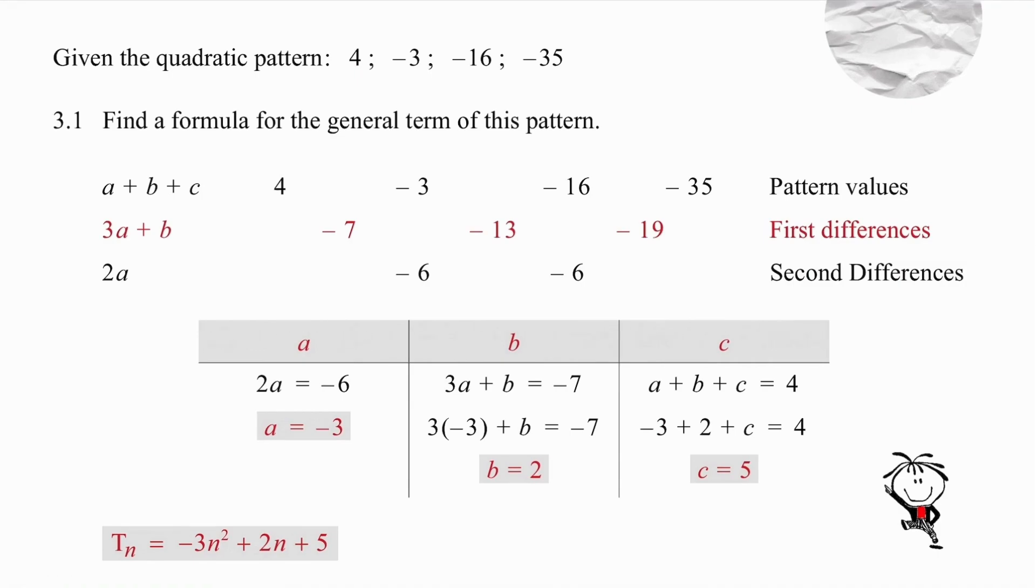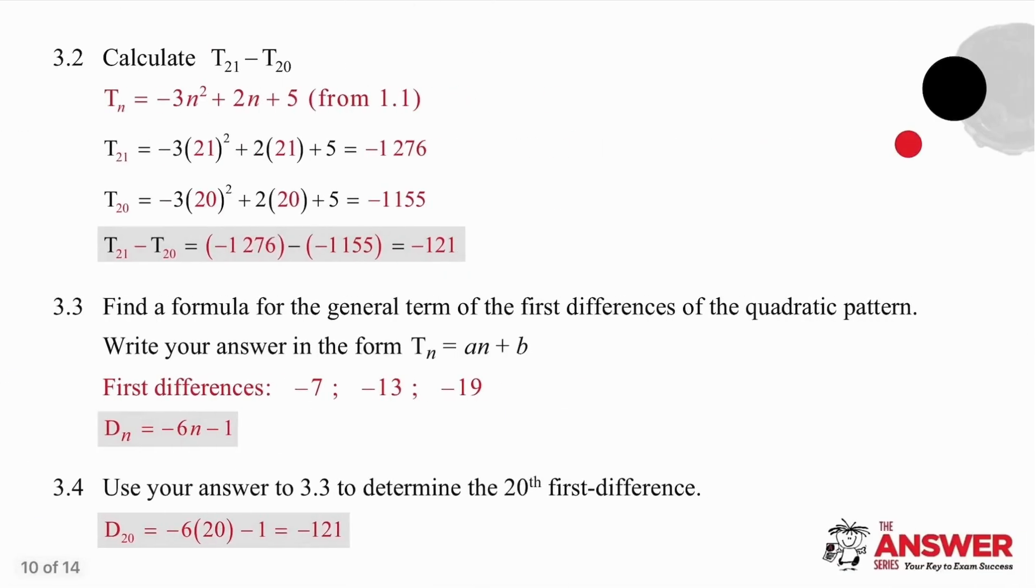Find a formula for the general term of this pattern. We have all the information we need. So, we work out our first differences, use them to work out the second difference. Then, set up your second difference equal to minus 6 and solve for A. Use your result and solve for B. Use both results and solve for C. We know that our formula is minus 3n squared plus 2n plus 5.